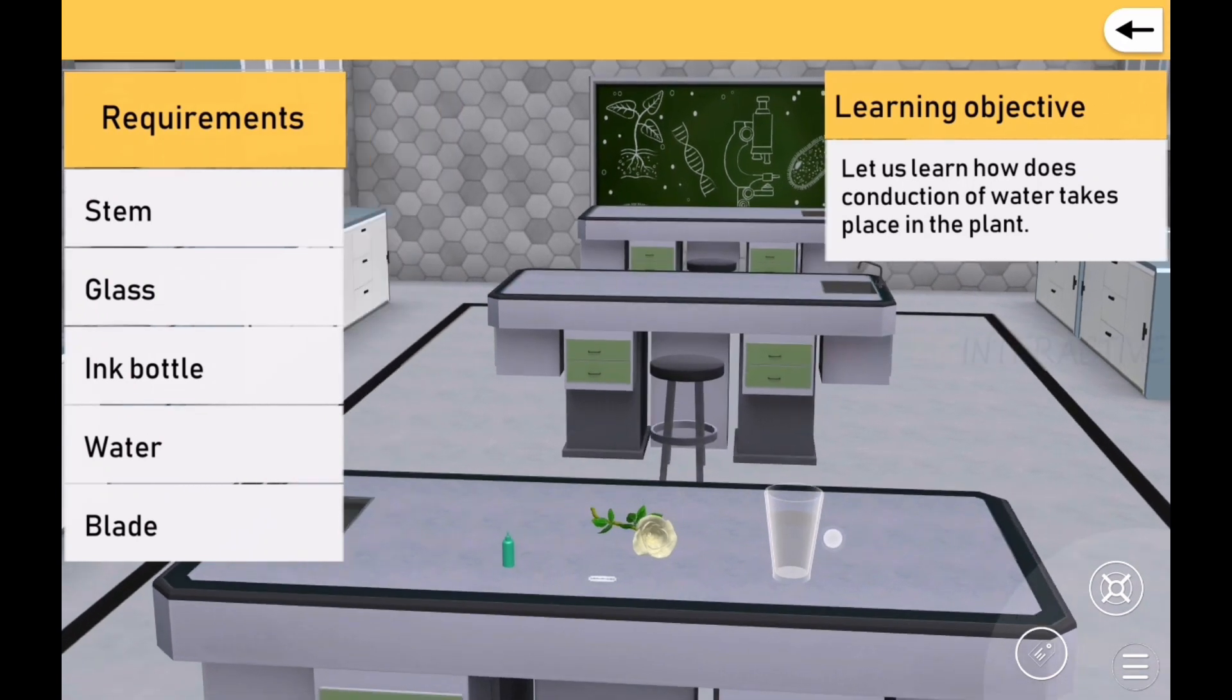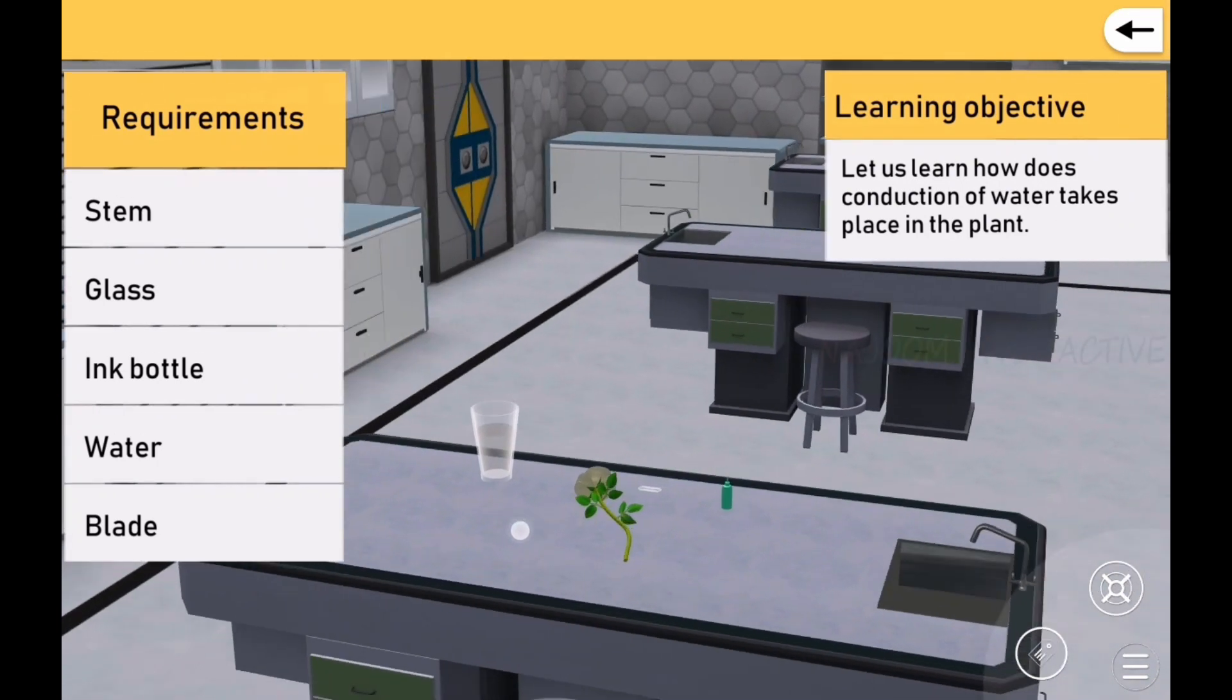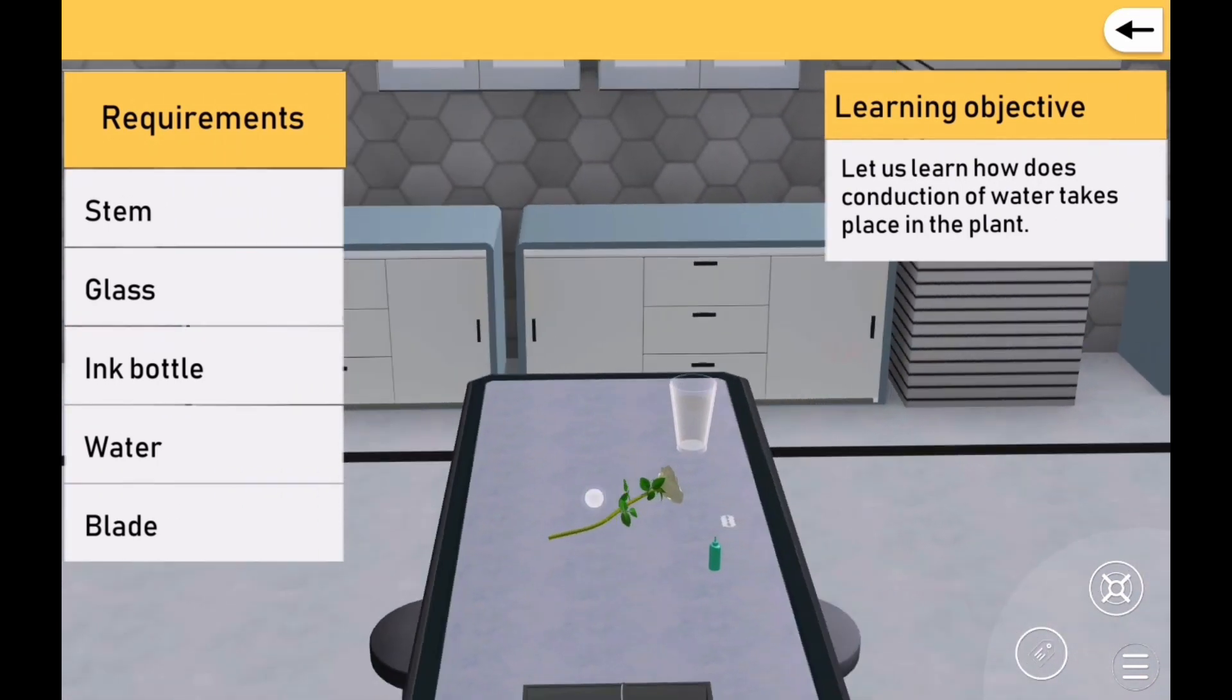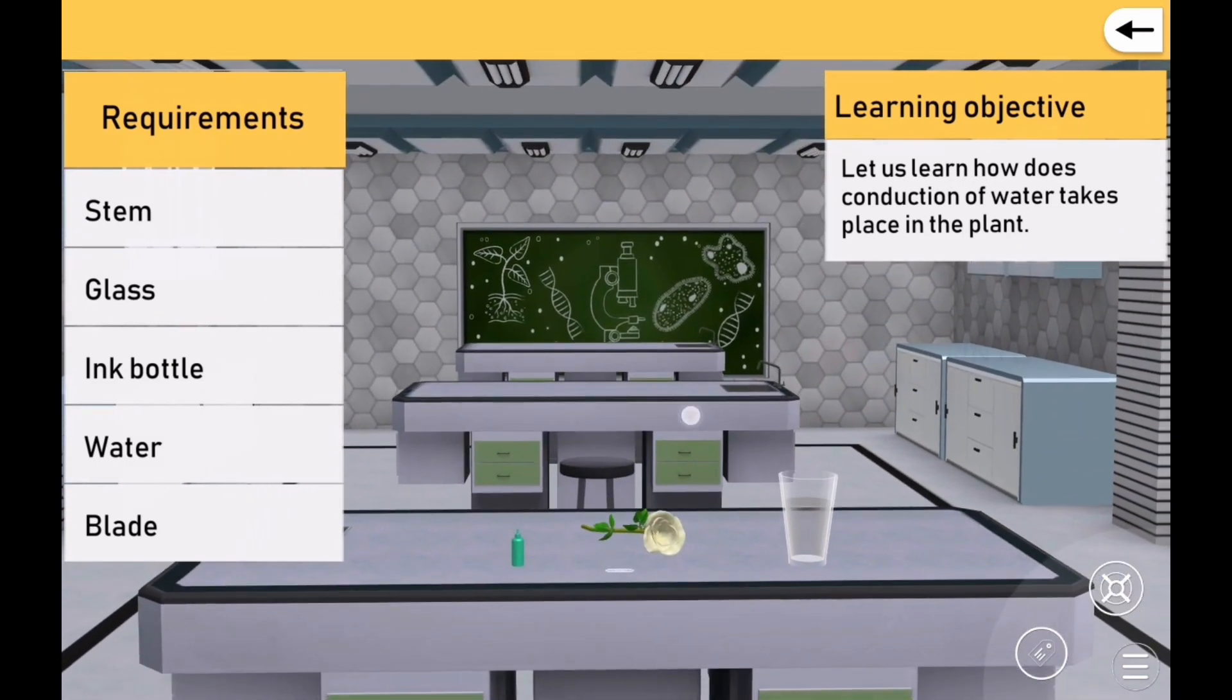रंगीन पानी वाले गिलास में डाली। आईए हम जानें कि पौधों में पानी का पहन कैसे होता है। इसके बारे में अधिक जानने के लिए, साइट पैनल से किसी भी बटन पर क्लिक करें।